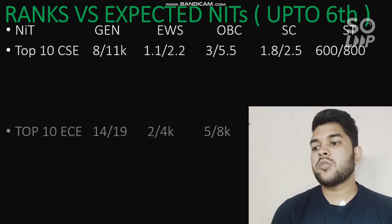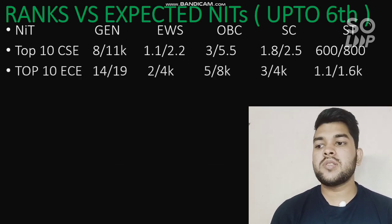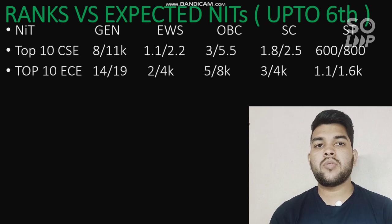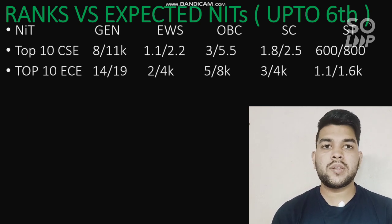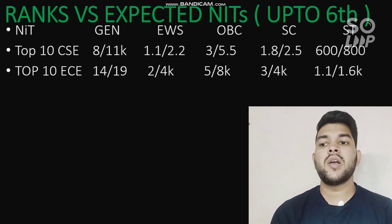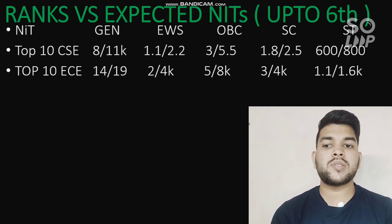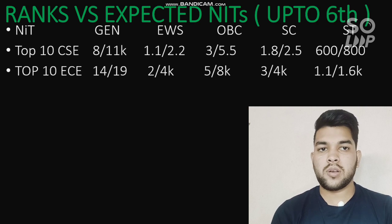For top 10 NITs with EC branch: General category cutoff is around 14,000 and 19,000 for male and female; EWS 2,000 and 4,000; OBC 5,000 and 8,000; SC 3,000 and 4,000; ST 1,100 and 1,600.